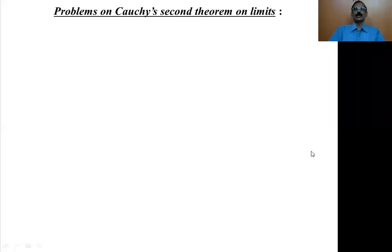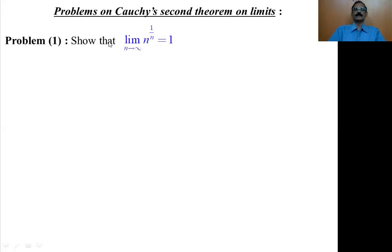Problems on Cauchy's second theorem on limits. Show that the limit of n to the power 1 by n as n tends to infinity is 1. That is, the limit of the nth root of n is 1.